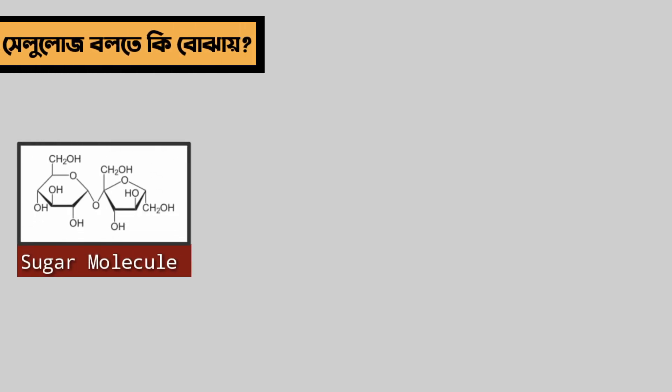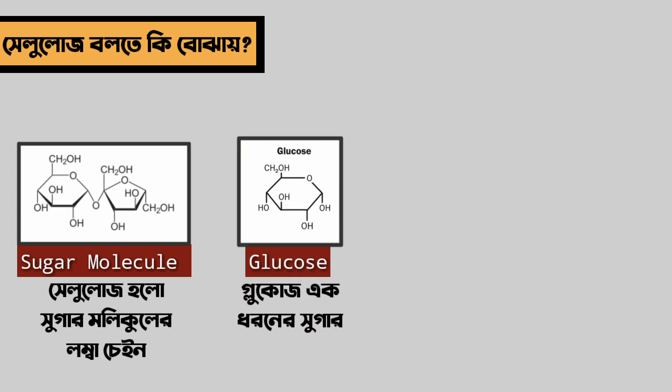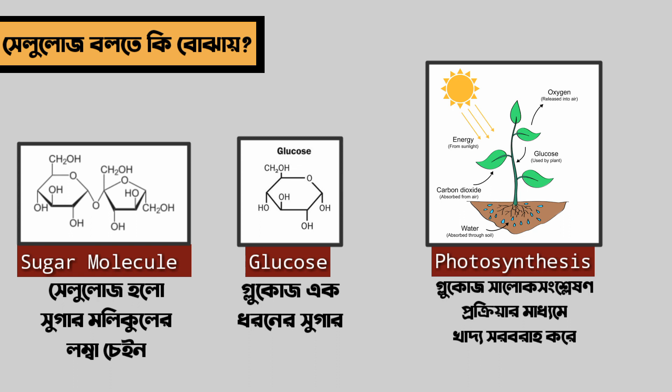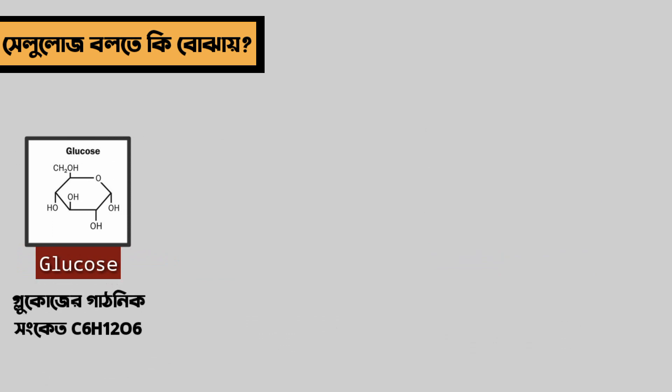Cellulose is a sugar molecule. It is called glucose. And glucose is a sugar. The glucose formula is C6H12O6.